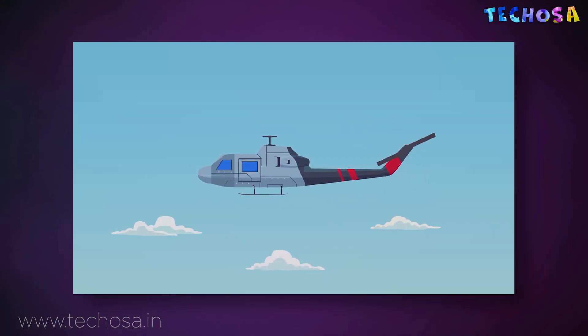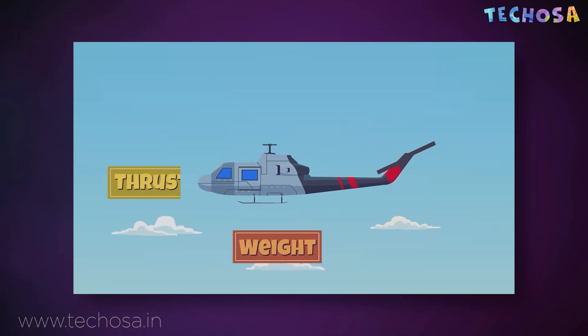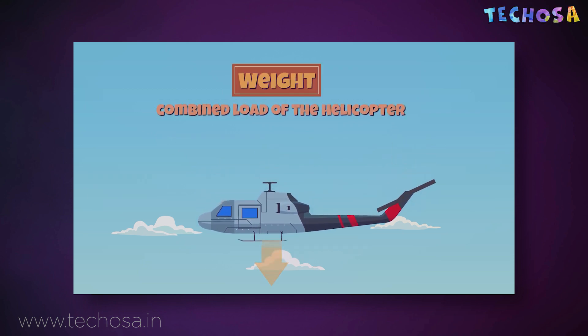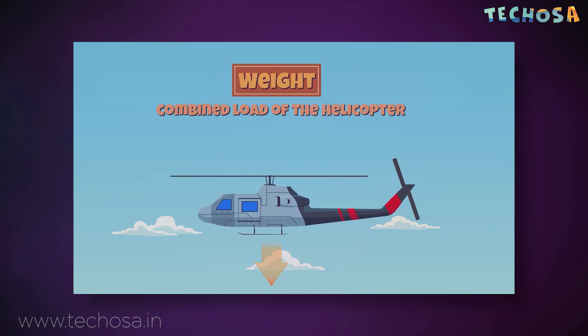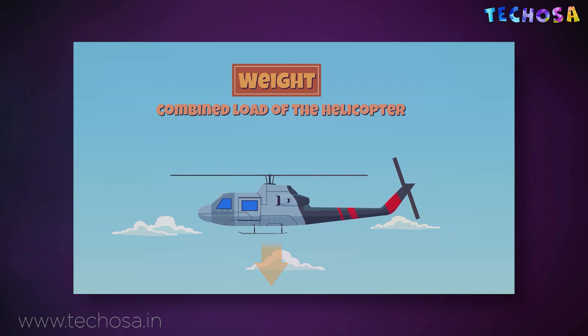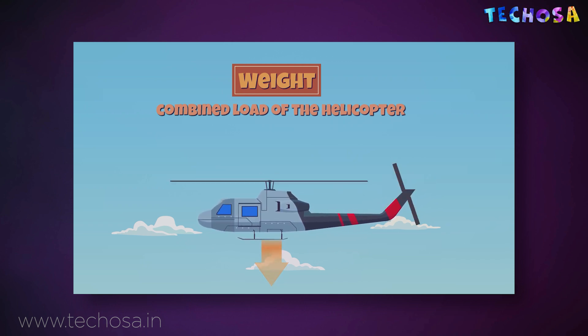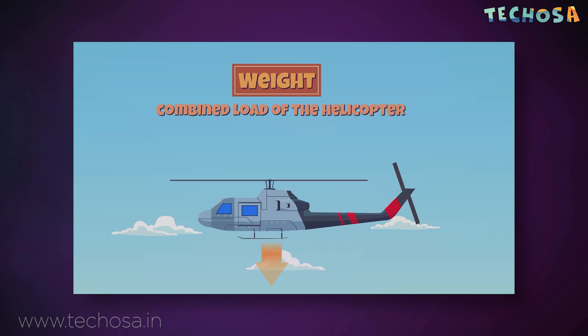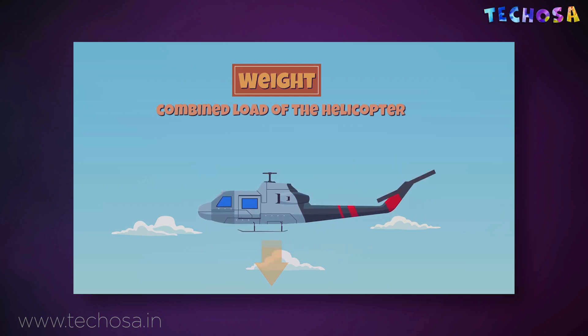But what makes the helicopter fly? Once the helicopter is off the ground, four aerodynamic forces act on it: weight, thrust, drag, and lift. Weight is the combined load of the helicopter, which includes the weight of the helicopter itself, the people inside it, and the cargo. This force pulls the helicopter downwards because of gravity.